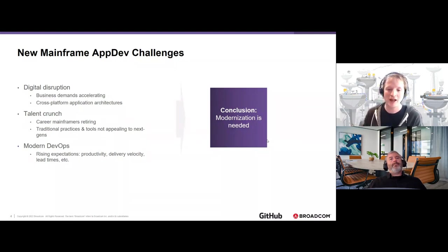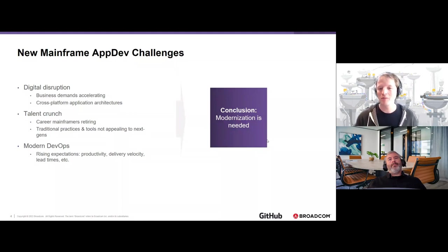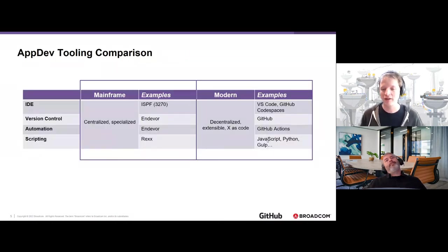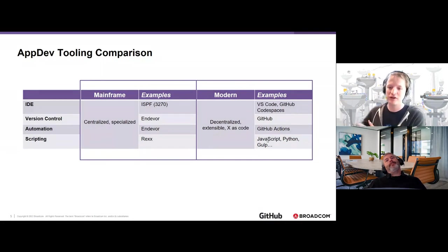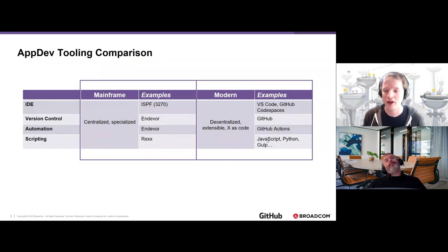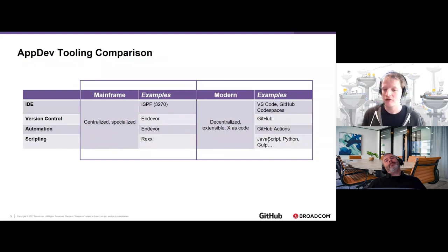We need to meet expectations of increased productivity and velocity while maintaining the security, robustness, and reliability that mainframe applications deliver. The tools familiar to existing mainframers — but not interesting to folks being asked to maintain those applications — include centralized, specialized tools for authoring, managing, and automating/deploying code. Whether we're talking about a 3270 or Endeavor for version control and automation, those are tools that are really mainframe-specific.